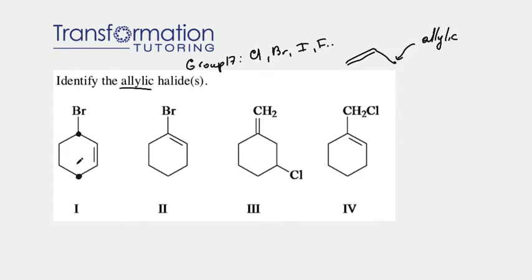Those are the allylic positions. Now, is there a halogen on one of these carbons? And indeed there is. This bromine is a halogen on the allylic position. Therefore, number one must be allylic halide.